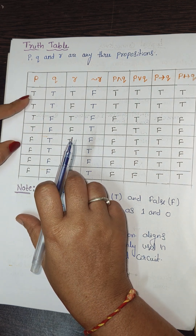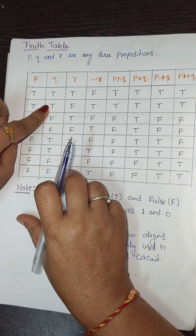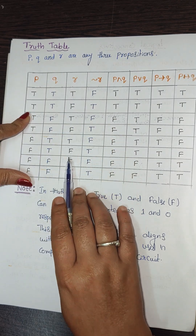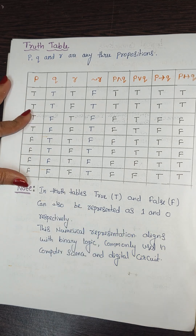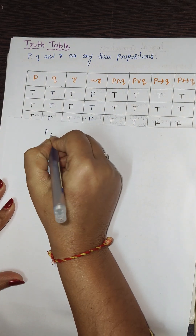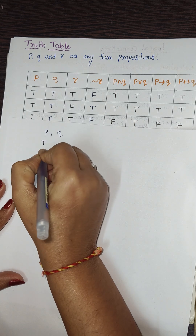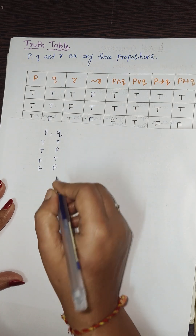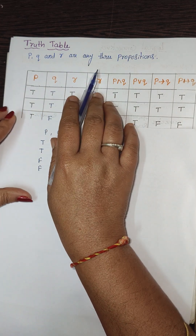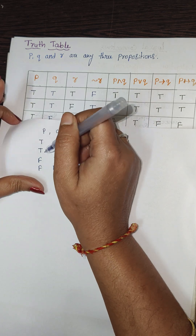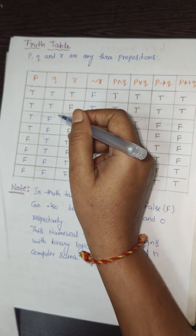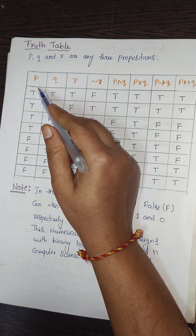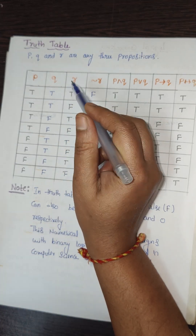For two propositions p and q, write p with two T's and two F's, and q as T F T F, giving four rows. For three propositions, p gets four T's and four F's, q gets two T's and two F's repeated, and r alternates T F, giving eight rows in each case.